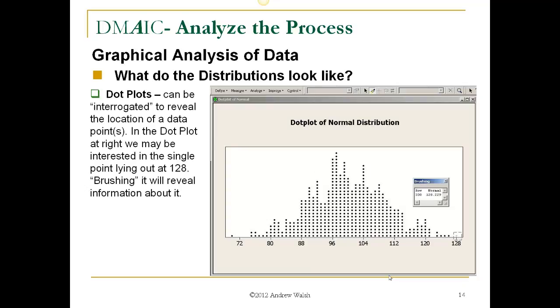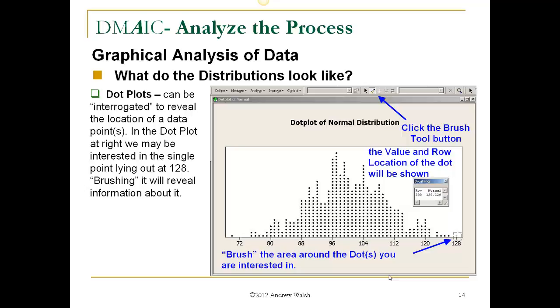One of the cool functions of the dot plots is they can be interrogated to reveal the location of a data point that you may be interested in. In the dot plot at right, we may be interested in the single point outlying out at point 128. Brushing it will reveal information about it. How do we do that? We click the brush tool button and brush the area around the dot you are interested, just much like you would crop an area. And the value and location of the dot will be shown. So here we see that dot, the actual value is 128.229, and it's in row 330 of our data. Especially with large data sets, it's great to be able to find where that data is. Now note, if there's more than one data point in each dot, and that can happen when there's large data sets, the brush tool cannot be used, and the tool will be grayed out and you will not be able to brush the area. And that's an indication that there's just too much data being held in the dot plot.